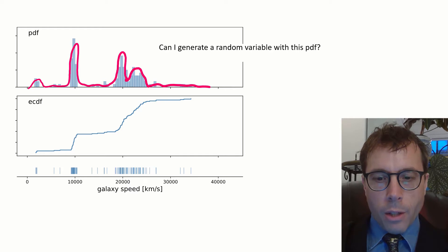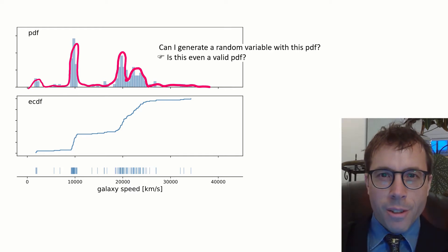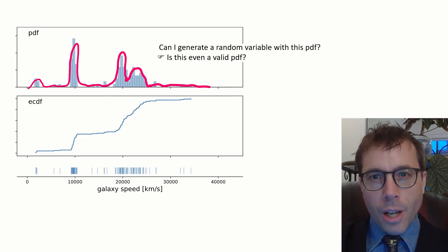But this is very tricky to get right. What if we've drawn something that isn't even a PDF? A PDF has to integrate to one, and this is hard to enforce when we're just sketching a curve by hand. If I try to make my PDF a bit taller in one place to fit the histogram better, I have to make it smaller everywhere else, and this is very fiddly to do.